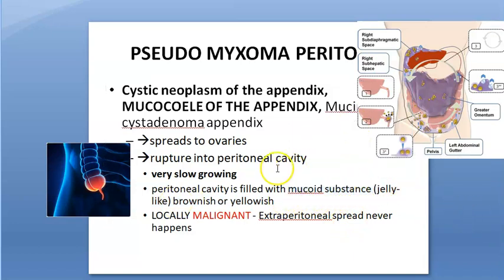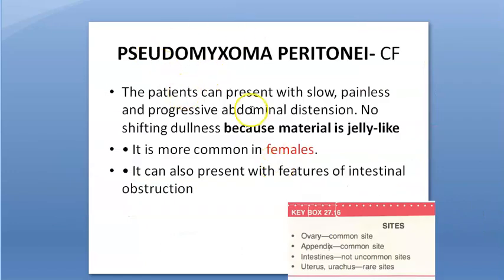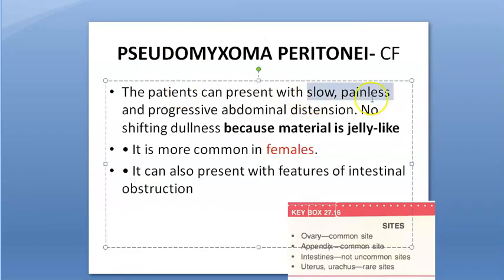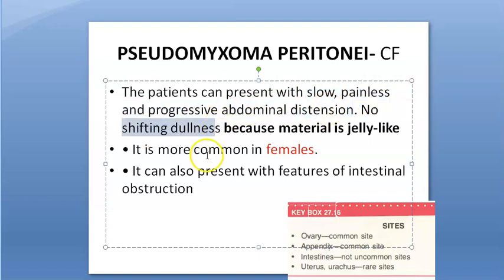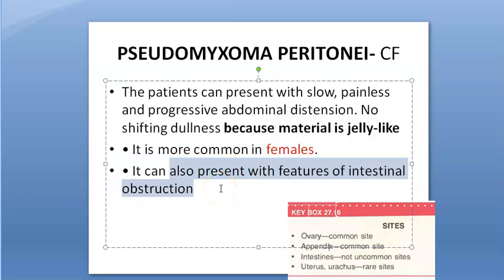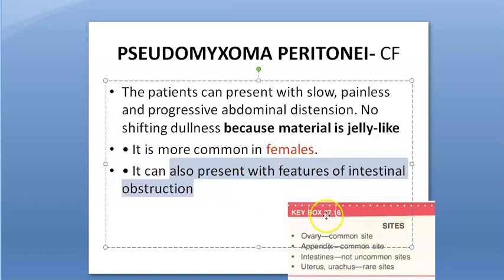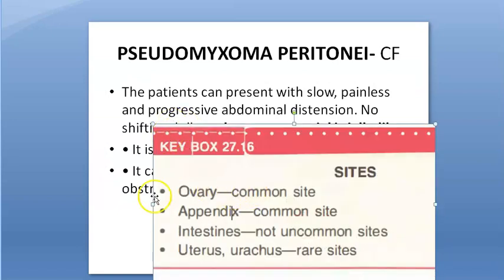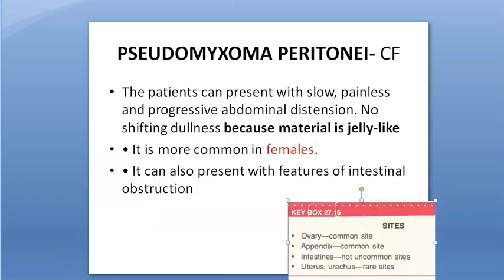The clinical features include slow, painless, progressive abdominal distension. There is no shifting dullness because it is not filled with fluid — it is filled with jelly-like material. This is more common in females and can also lead to intestinal obstruction. Common sites include ovary, appendix, intestine, uterus, and urachus.